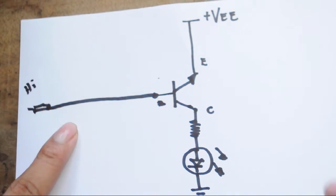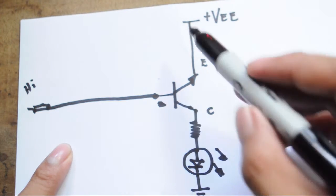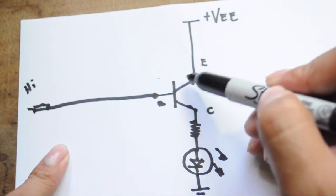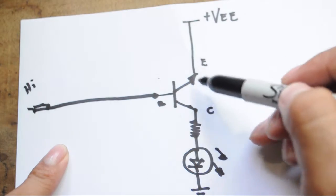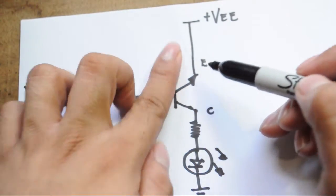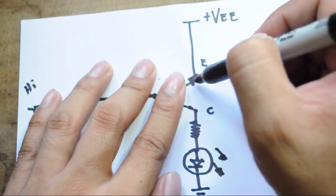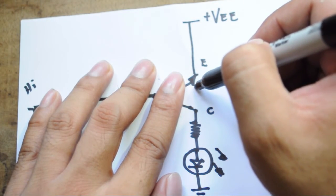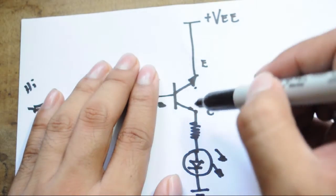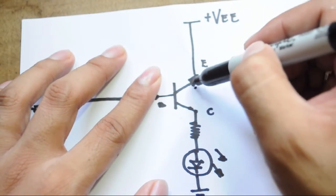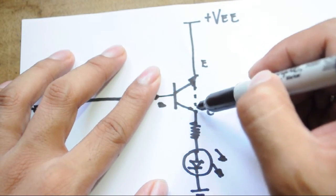The operation of this mode is when a high signal from the probe passes to the base, it will make the transistor saturated. Thus, it will connect the emitter and the collector together, sort of a bridge connecting the positive VEE and the ground, and the green LED will light up.